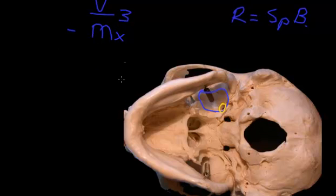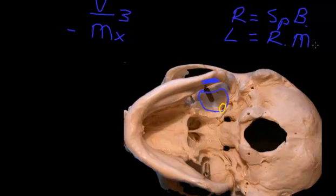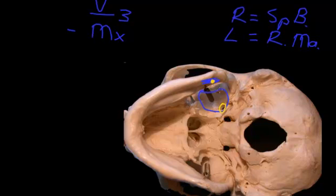The lateral wall of the infratemporal fossa is the ramus of the mandible. There's an infratemporal fossa on the left and the right side. On the medial surface of the ramus of the mandible sits another key feature important to dentistry: the mandibular foramen. So the inferior alveolar nerve is going to make its journey from foramen ovale down to the mandibular foramen.